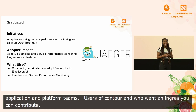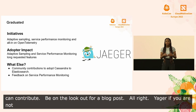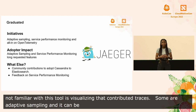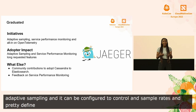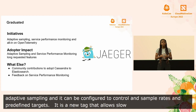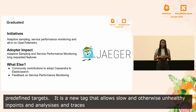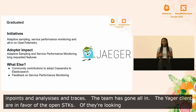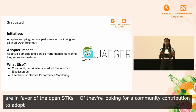Jaeger is a scalable platform for collecting, processing, and visualizing distributed traces. Initiatives include adaptive sampling, where the Jaeger backend can be configured to perform fully automated dynamic control of sampling rates based on predefined targets. Service performance monitoring is a new tab in the Jaeger UI that allows identifying slow or unhealthy services and endpoints through aggregate analysis of traces. The team has gone all in on OpenTelemetry — Jaeger clients and SDKs have been officially retired in favor of OpenTelemetry SDKs. They're looking for community contributions to adapt Cassandra and Elasticsearch for adaptive sampling.